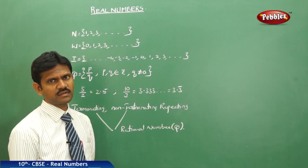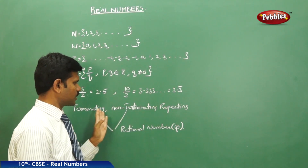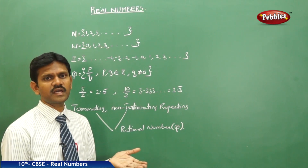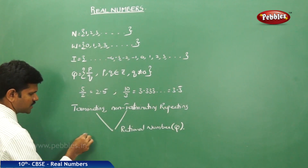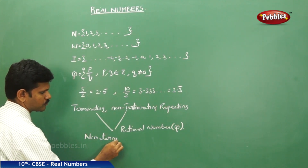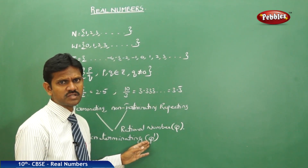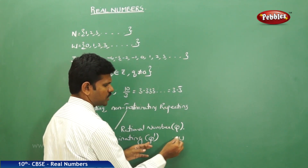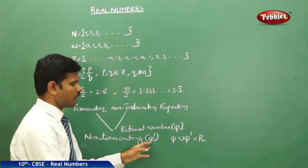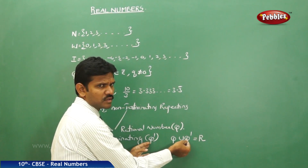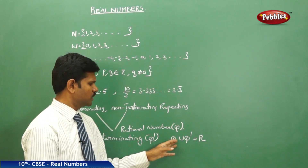Decimals are of three types: number 1, terminating; number 2, non-terminating; number 3, non-terminating repeating. Among these three, the first and third are selected as rational numbers. The third type — non-terminating non-repeating — is called irrational numbers, denoted with Q dash. Therefore, the union of rationals and irrationals gives us real numbers. A real number is a combination of rational and irrational.